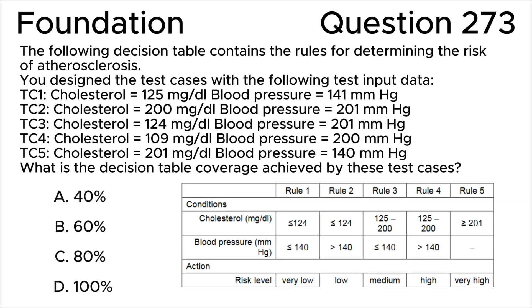ISTQB foundation level version 2. The following decision table contains the rules for determining the risk of atherosclerosis (see figure). You design test cases with the following input data: Test case 1 — cholesterol equals 100 to 25 milligrams per deciliter, blood pressure equals 141 mmHg. Test case 2 — cholesterol equals 200 milligrams per deciliter, blood pressure equals 201 mmHg.